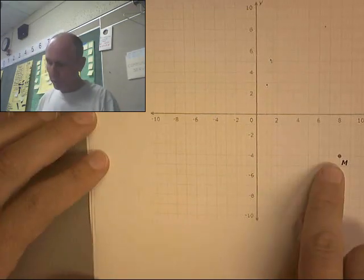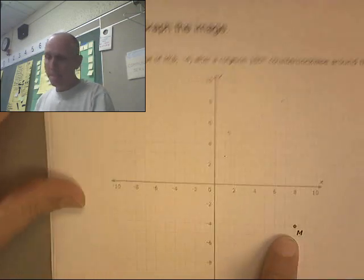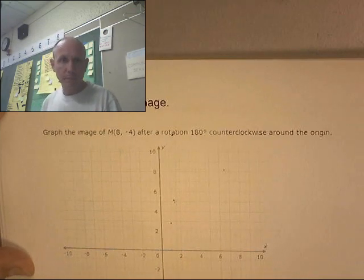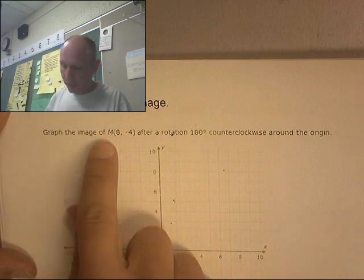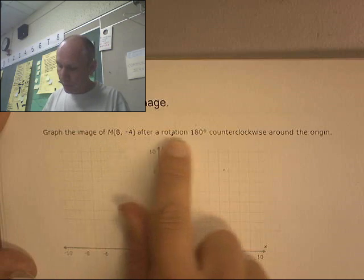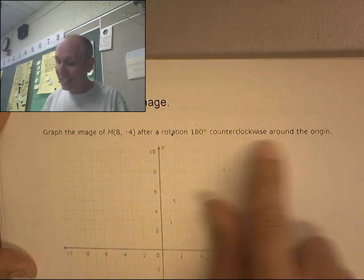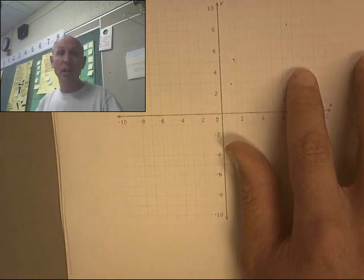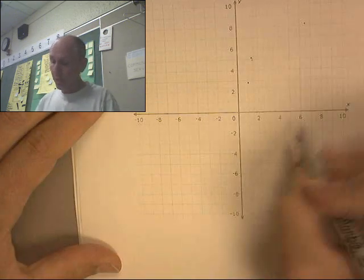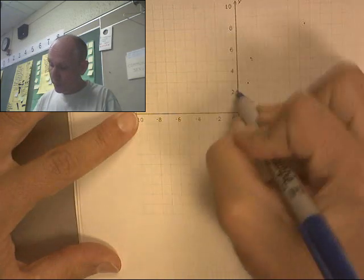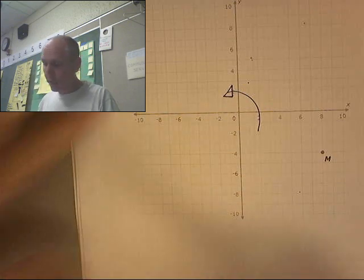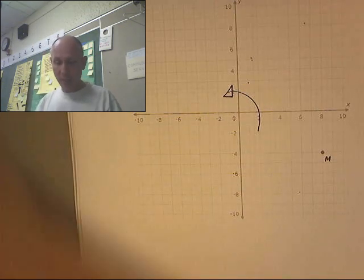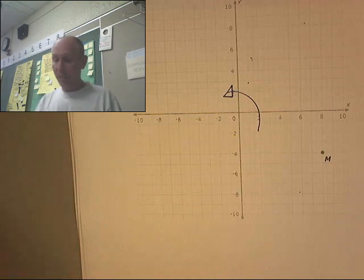Rotation. See this point P? Here are the instructions for it. Graph the image. Why did I call it P? It's an M. Graph the image of M after a rotation of 180 degrees counterclockwise around the origin. Counterclockwise, 180 degrees. Counterclockwise means it's going to be going this way, and 180 degrees means it's going to basically be going 180 degrees.